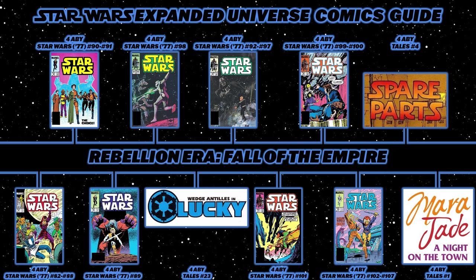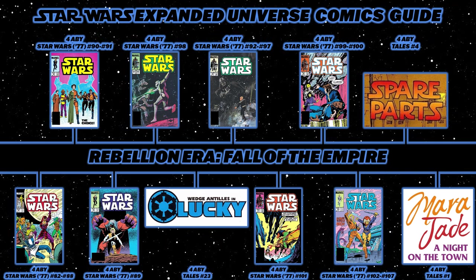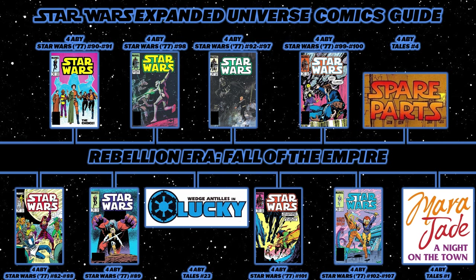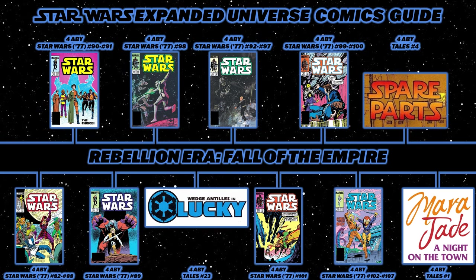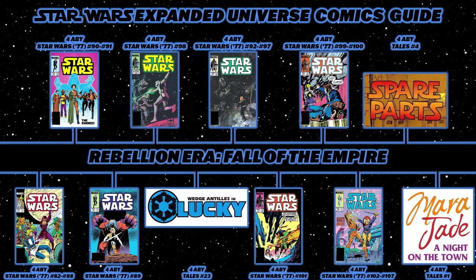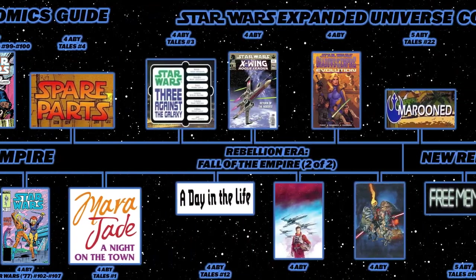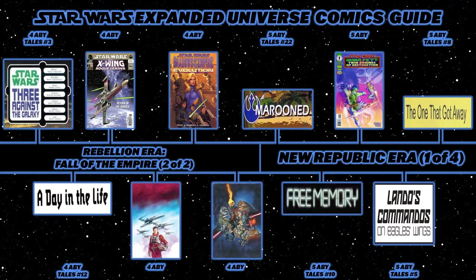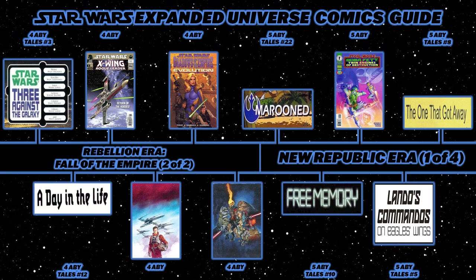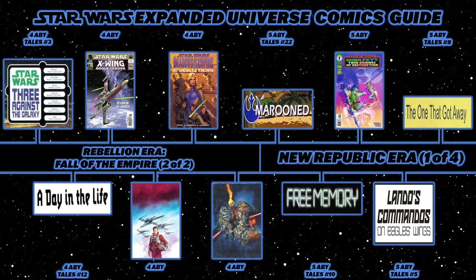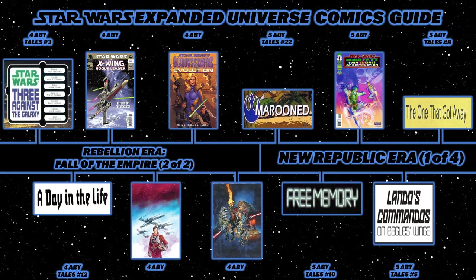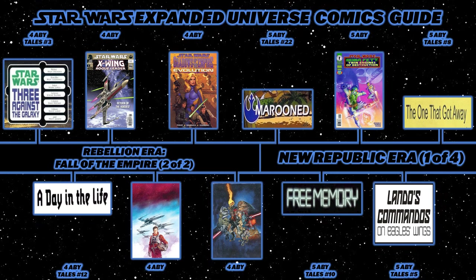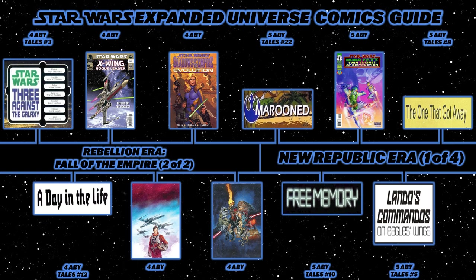After finishing the Marvel 77 line, read Star Wars Tales number 4's Spare Parts, then Star Wars Tales number 1's Mara Jade: A Night on the Town. Then Tales number 3's Three Against the Galaxy, and Tales number 12's A Day in the Life. Then we finally enter the world of X-Wing comics, beginning with the three-issue miniseries X-Wing Rogue Leader.